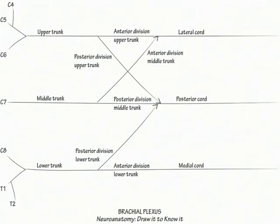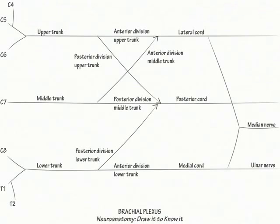Now connect the distal lateral and medial cords and label their union as the median nerve. Then show the medial cord becomes the ulnar nerve and the posterior cord becomes the radial nerve.